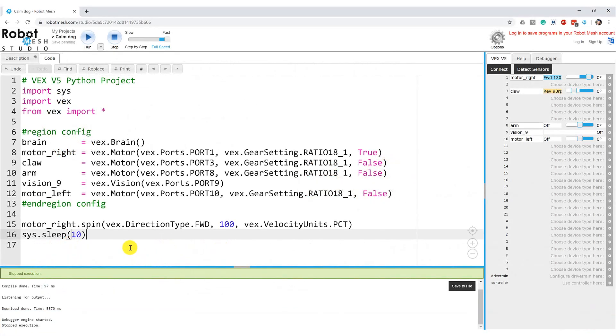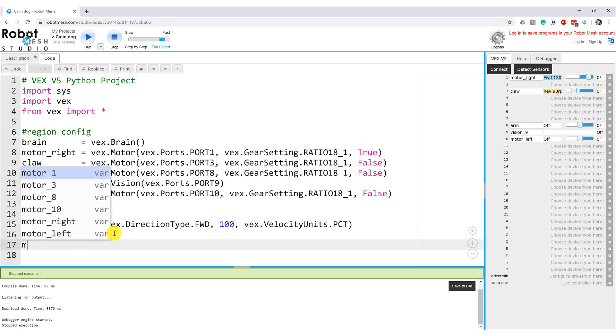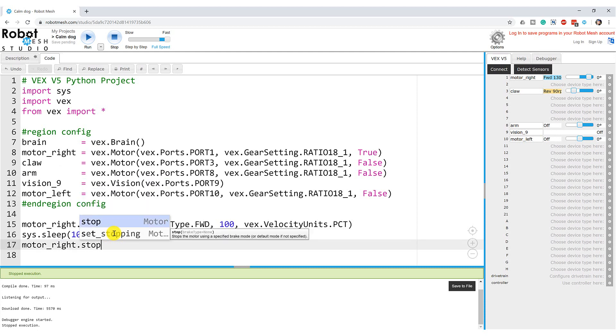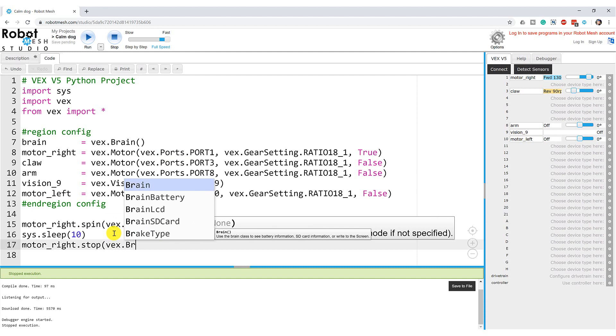Let's add a couple of extra lines to this program to see what happens when our motor stops using the coast command. So here I'm going to add an additional line and I'm going to type motor_right.stop and then in opening parenthesis here I'm going to have to specify the brake type. So let's type vex.braketype and again if I wasn't sure of this command I could leaf through the IntelliSense here to find it